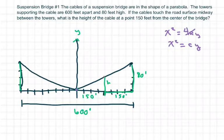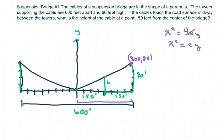Let's label these points here. This point is 300 feet from the center, so this is (300, 80). And this point here is (150, y), where y is what we're really looking for.